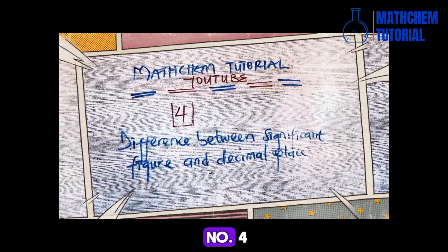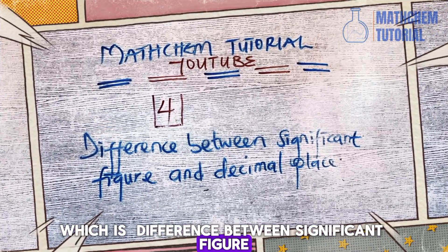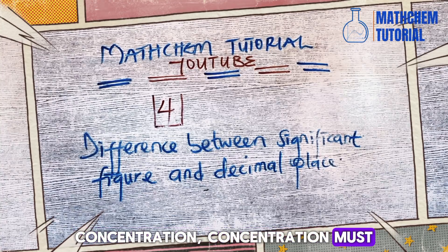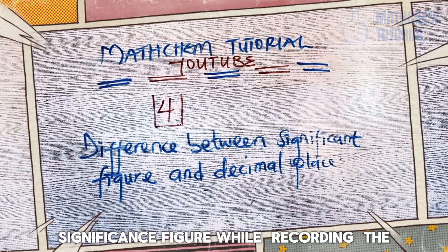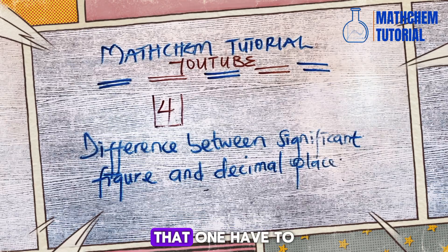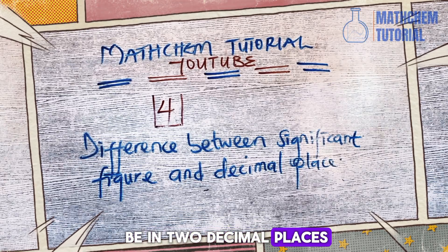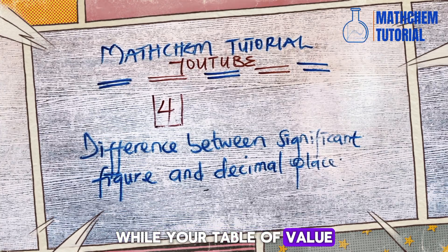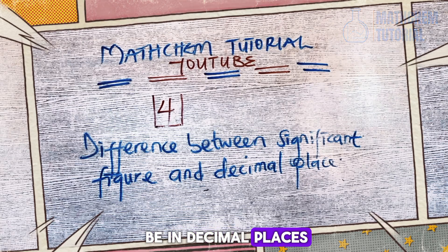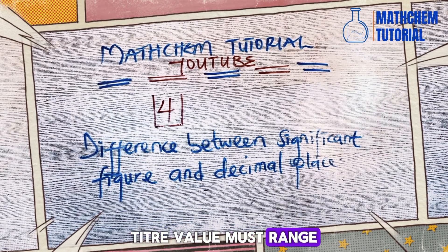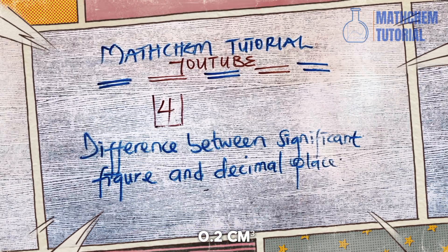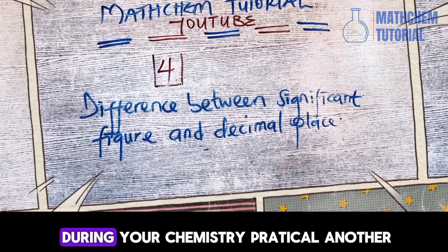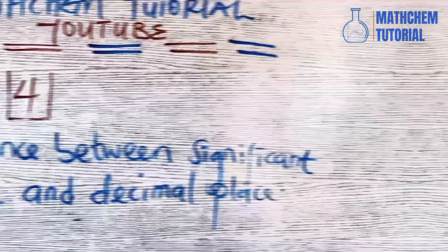Number four is the difference between significant figures and decimal places. Students should take note: concentration must be expressed in three significant figures, while the titre value must be in two decimal places. Your concentration must be in three significant figures, your titre value must be in two decimal places, and your concordant titre value must range within plus or minus 0.2 cm³. These are things you need to note to avoid losing marks in your chemistry practical.